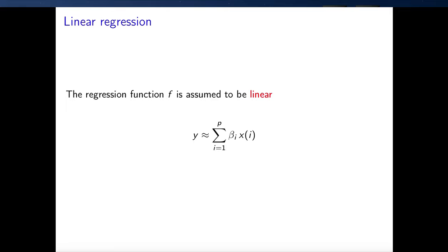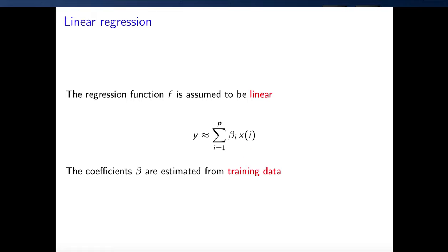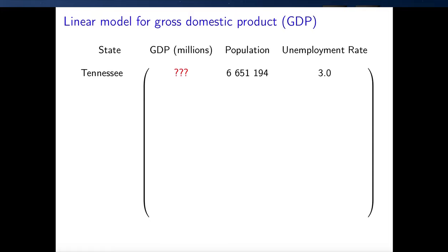We're going to be focusing on linear regression where we make the assumption that we want to learn a function that is linear — just a weighted sum. These weights are going to be fixed of the features and that's what gives us the prediction. A technical side note is that usually you would do some preprocessing on these features where we center and normalize them, but I'm not going to go into detail there. You can refer to any textbook on linear regression for those details. The idea is that we're going to estimate these coefficients beta — these weights which determine the function we use to estimate the response.